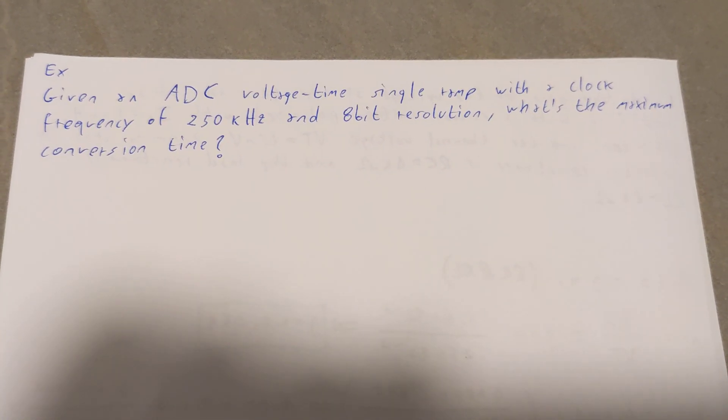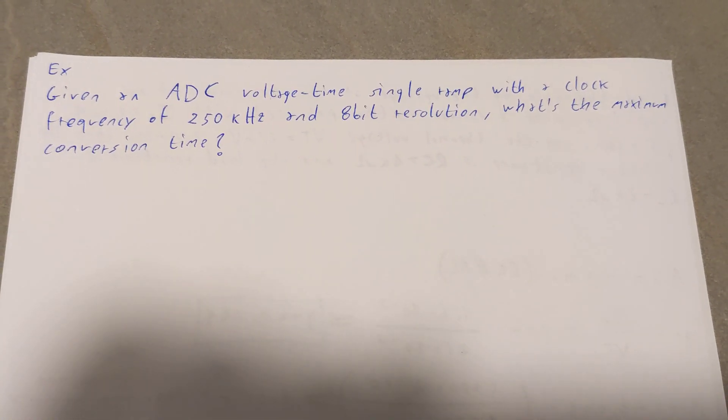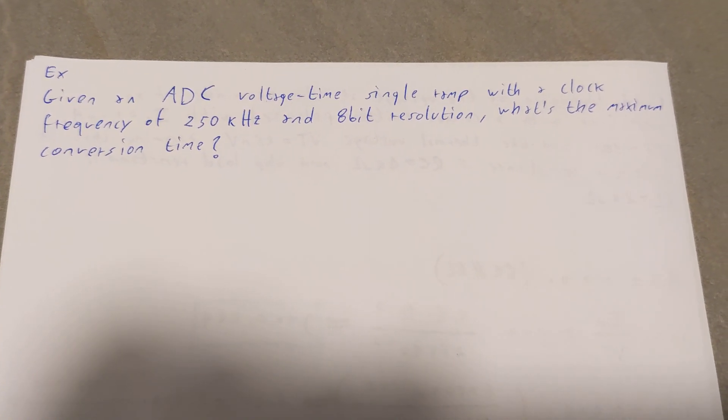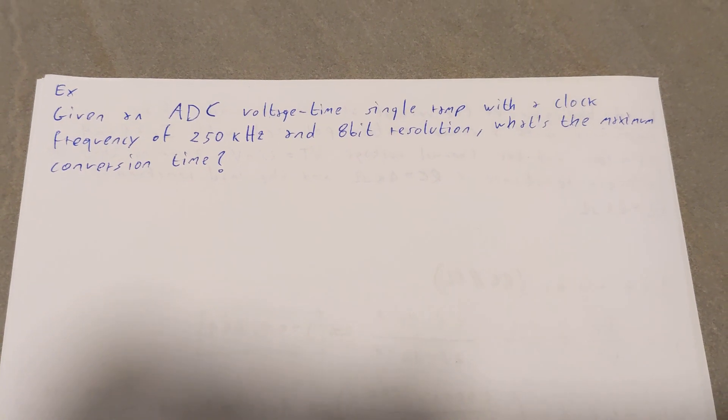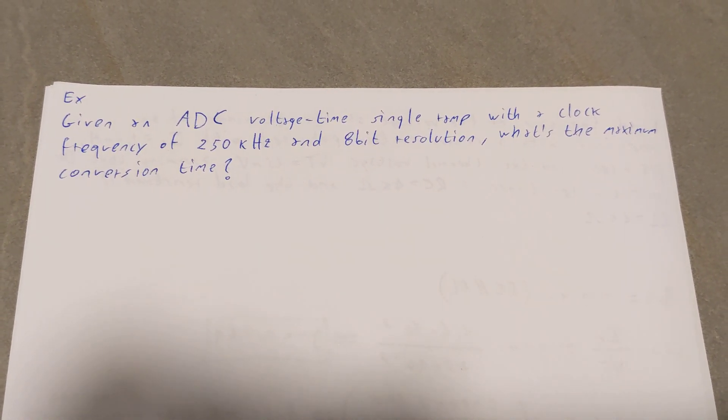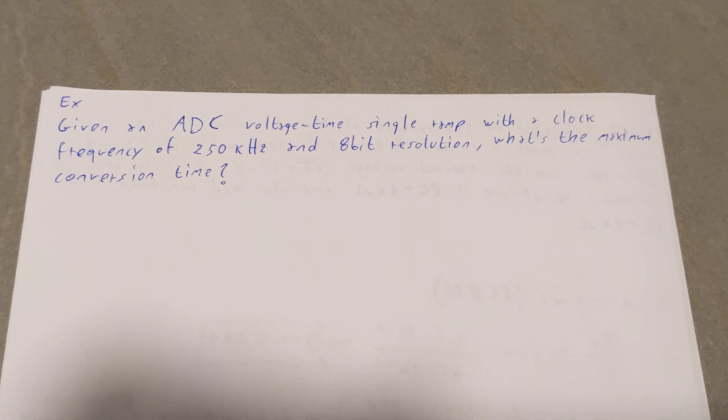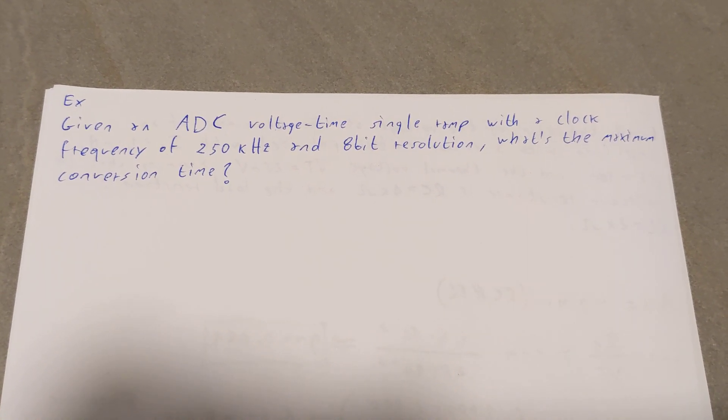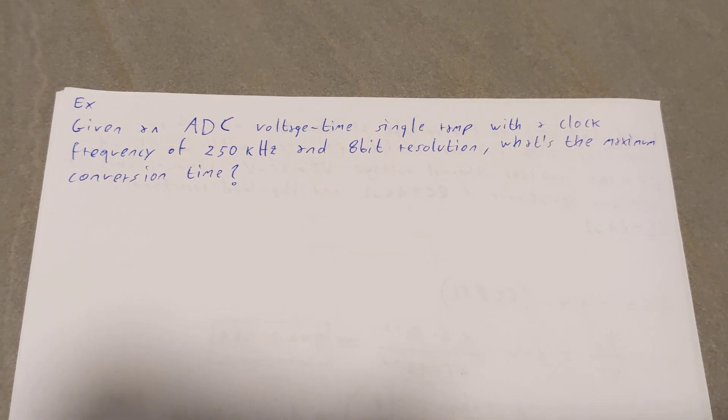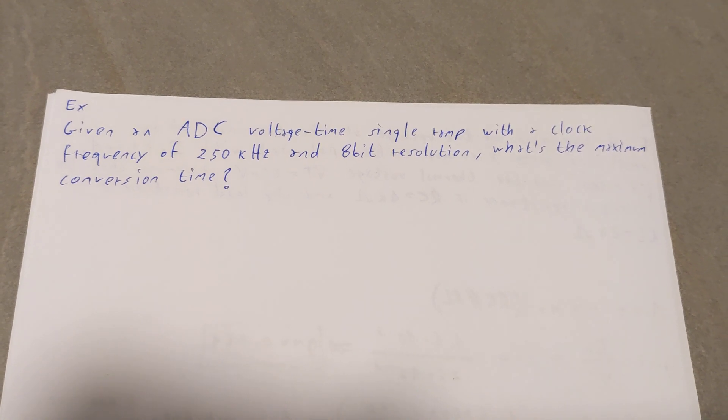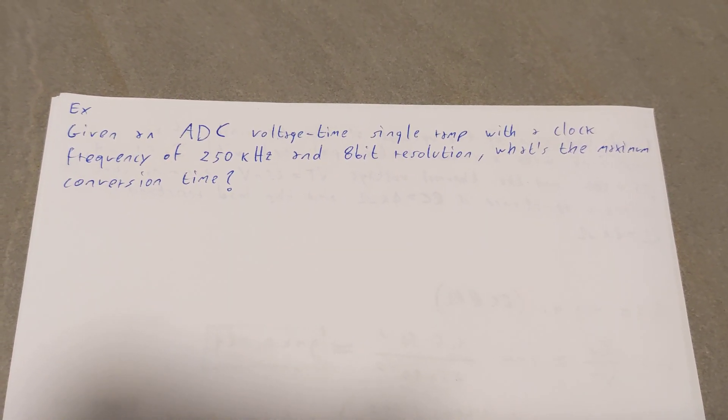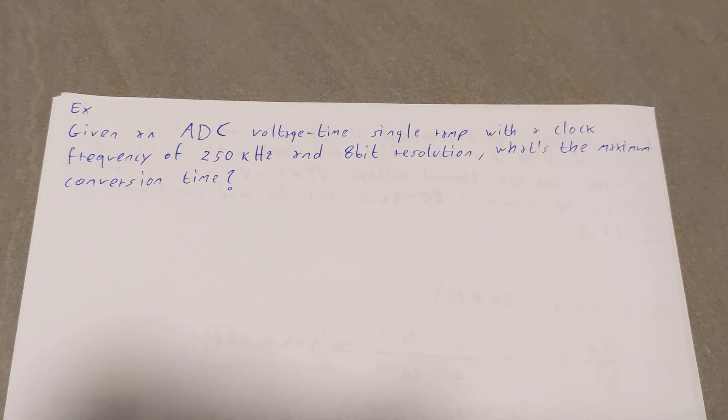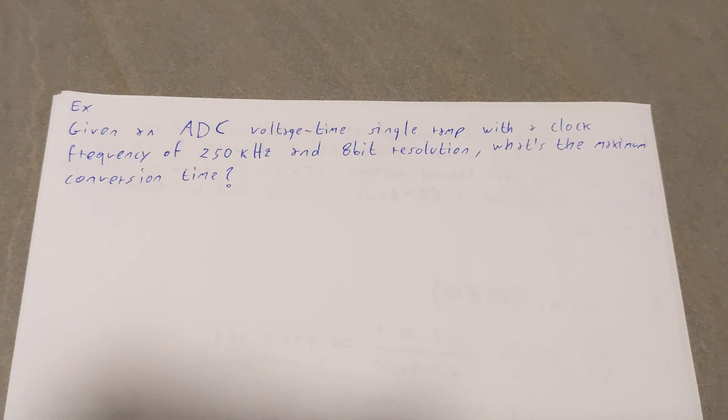Given an ADC voltage-time single ramp with a clock frequency of 250 kilohertz and an 8-bit resolution, what's the maximum conversion time? So how long is it going to take for the conversion to end in the worst case scenario?